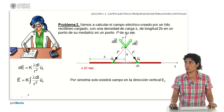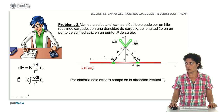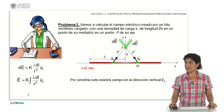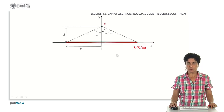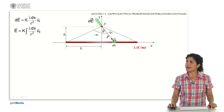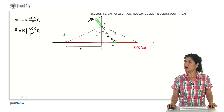The vertical components will superimpose for the whole distribution. So at the study point, due to symmetry, only a vertical field component survives. We must therefore study only the vertical (y) projection of each field differential, using the cosine of the angle alpha formed by the position vector with the vertical. To cover the full distribution, alpha varies from minus alpha_1 to plus alpha_1.